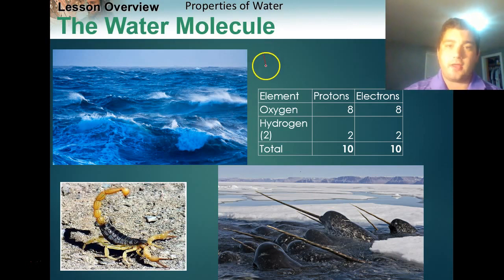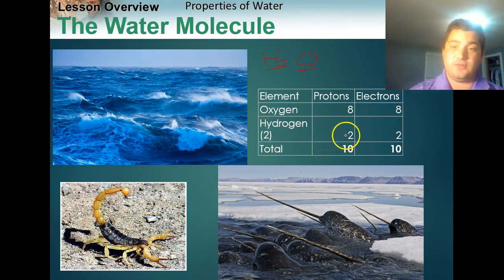So when we talk about the water molecule, the chemical formula is H2O. So we have two hydrogens, one oxygen. Now if you remember, atomic number for oxygen is eight, so it has eight protons. Atomic number for hydrogen is one, so it has one proton, but since there's two of them we have two. So we have a total of ten protons, and we have ten electrons.